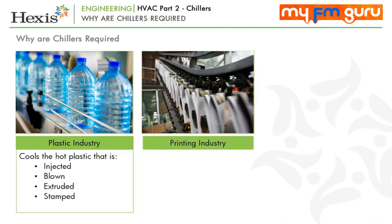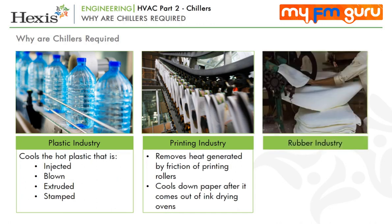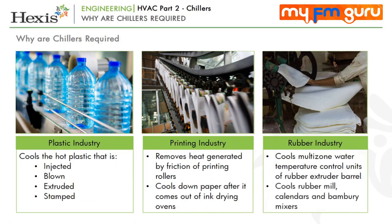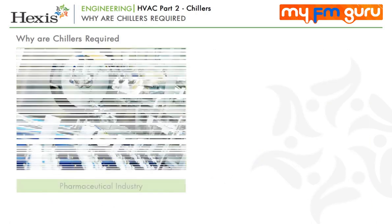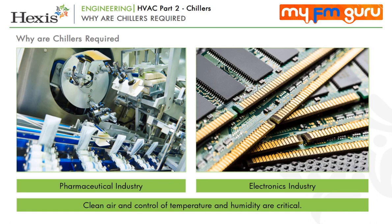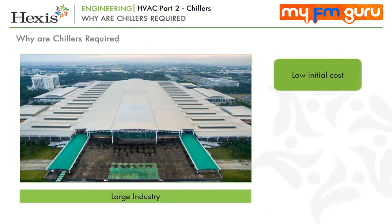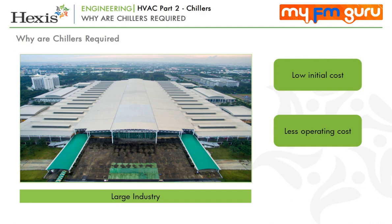Similarly, in the printing industry, a chiller not only removes the heat generated by the friction of the printing rollers, but also cools down the paper after it comes out of the ink drying ovens. In the rubber industry, they are used to cool multi-zone water temperature control units of the rubber extruder barrel, and also cool the rubber mill, calendars and bambury mixers. Some industries like pharmaceuticals and electronics require clean rooms where a high level of clean air and control of temperature and humidity are critical to the processes. For larger systems, chillers are much cheaper with respect to initial cost and also have less operating cost compared to DX systems for the same capacity. With cooling expenses accounting for 30% to 50% of total energy costs, chillers help in reducing the utility bills of a large facility.